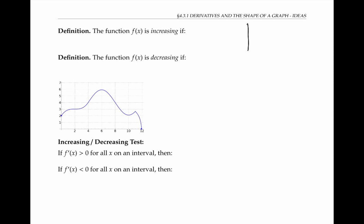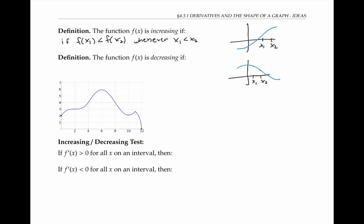We say that a function is increasing if f of x one is less than f of x two, whenever x one is less than x two. In other words, the graph of the function goes up as x increases from left to right. We say that the function f is decreasing if f of x one is greater than f of x two, whenever x one is less than x two. In other words, the height of the function goes down as we move from left to right.